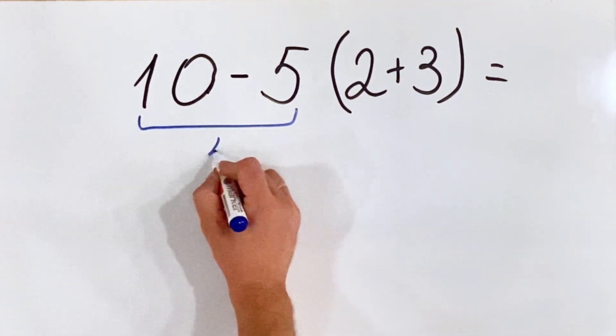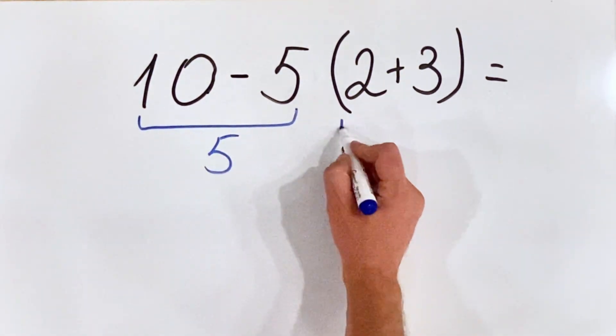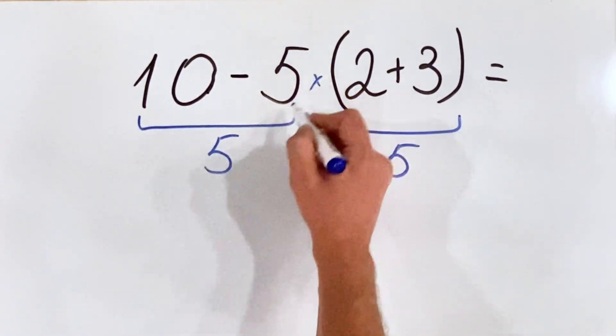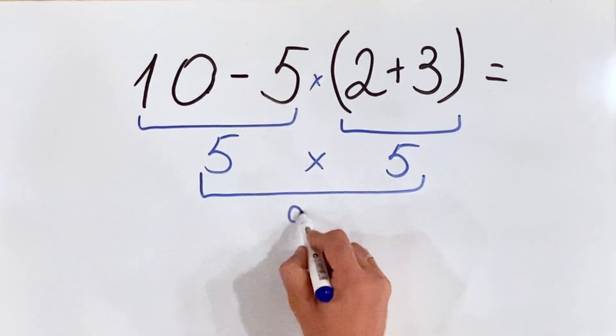10 minus 5 equals 5. 2 plus 3 equals 5. 5 multiplied by 5 equals 25.